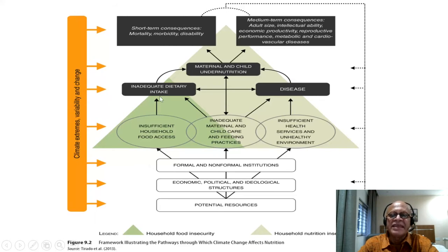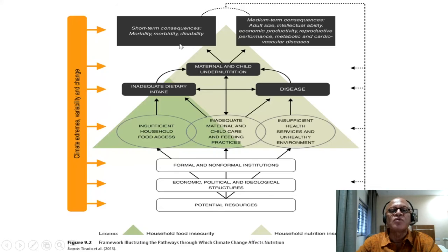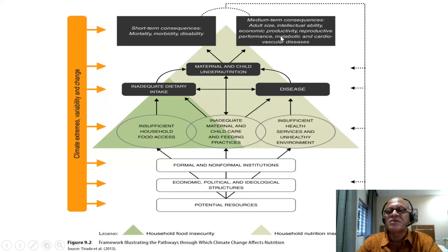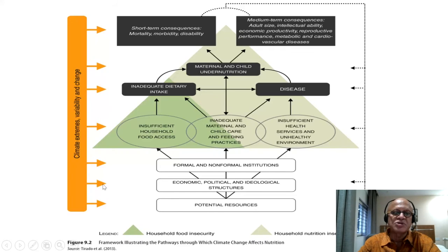These lead to inadequate dietary intake and disease, which feed back with each other. Inadequate maternal and child care and feeding practices feed into maternal and child nutrition and child undernutrition, which then leads to short-term consequences in mortality, morbidity, and disability, and medium-term consequences in adult size, intellectual ability, economic productivity, reproductive performance, and metabolic and cardiovascular diseases. All of which feed back to maternal and child undernutrition, diseases, and household food and nutrition insecurity.